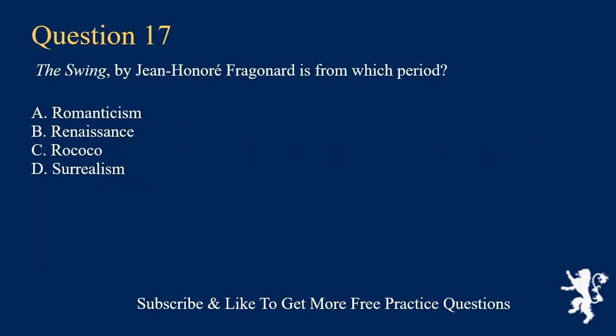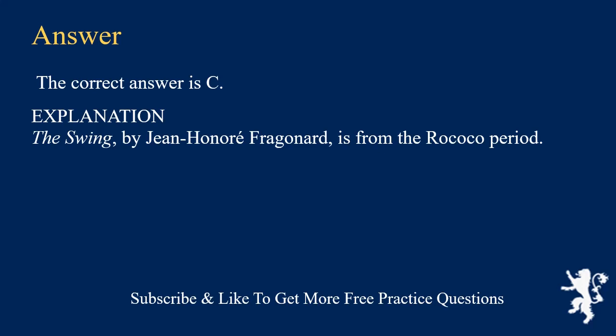The Swing, by Jean-Honoré Fragonard, is from which period? A. Romanticism. B. Renaissance. C. Rococo. D. Surrealism. The correct answer is C.